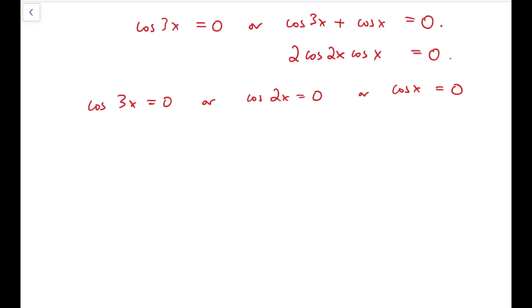We don't have restrictions on x values, so for the first case, 3x = π/2 + kπ where k is any integer. Simplifying, x = π/6 + kπ/3.